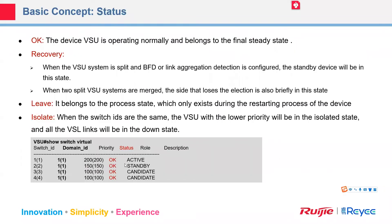About the state: 'active' means the device is operating normally and selected as master. 'Recover' means the system was split and we cannot detect the master — one standby becomes recovered. 'Leave' belongs to the process state and exists only during the restarting process. 'Isolate' means the switch IDs are the same, so the lower-priority VSU enters isolated state, and in this state all links go down.